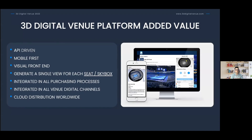The platform works with any client through an API, which is the main pillar allowing us to create mobile-first experiences. We generate the visual front end that allows clients to consult any seat view of the venue — any skybox, VIP suite, or club lounge. Everything we do is integrated within the purchase flow. This is the most important thing: including it as part of an interactive sales tool is what drives more conversions.